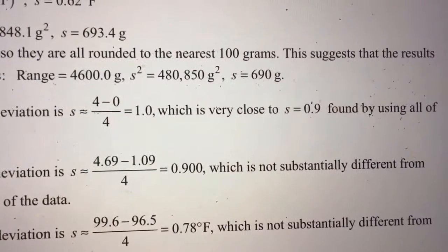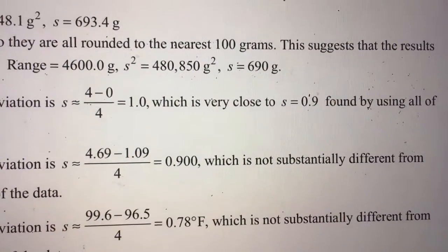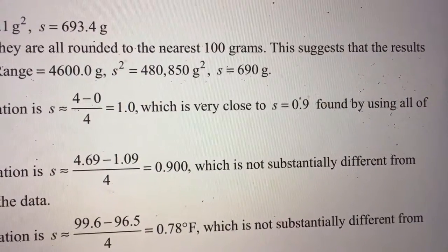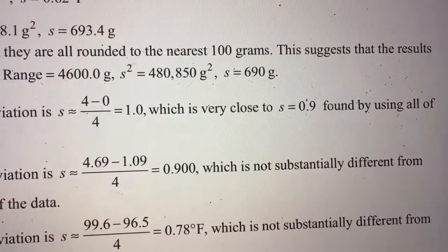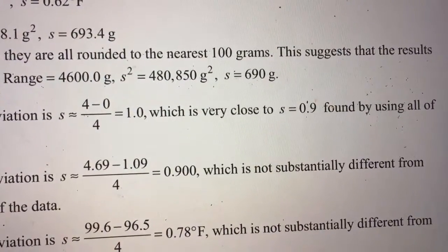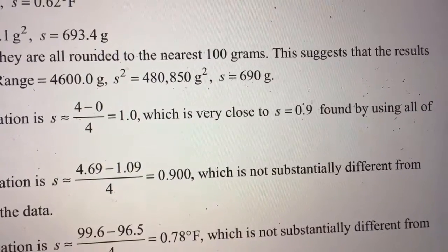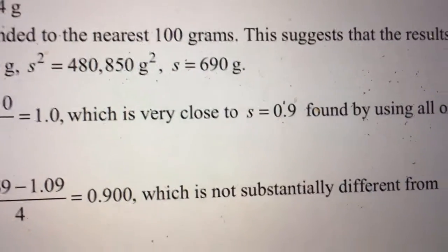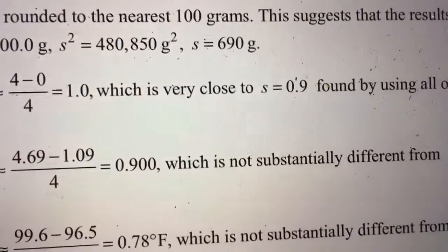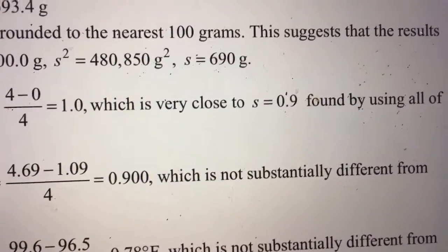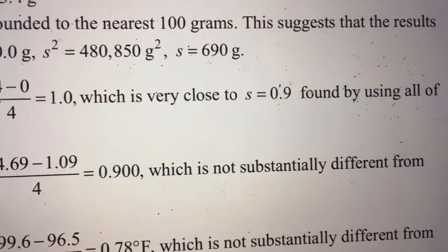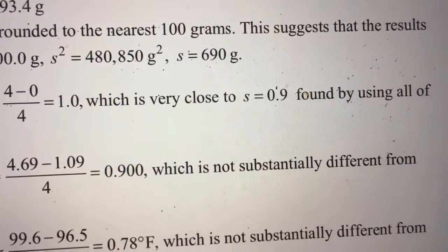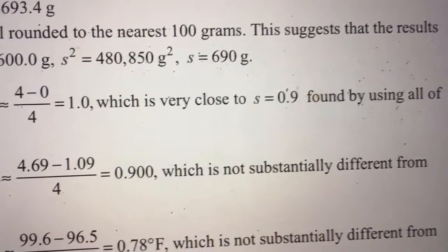The answer key confirms: the range rule of thumb gives s = (4 − 0) / 4 = 1, which is very close to the 0.9 found by using all of the data. They rounded the standard deviation from 0.929 to 0.9 because all the original data was single-digit with no decimals — so we can only go one more decimal place of accuracy than we started with.